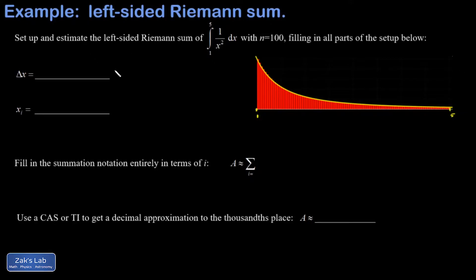Now to get some of this written down, the delta x and the xi, I'm going to put some notation in here. We normally call the starting position x0 and the finishing position xn, which is x100 in this case.